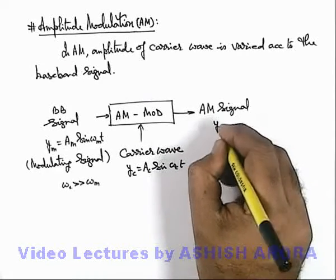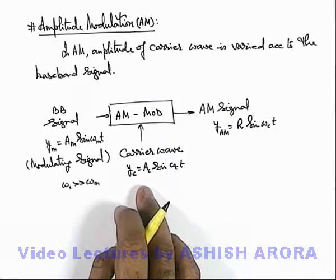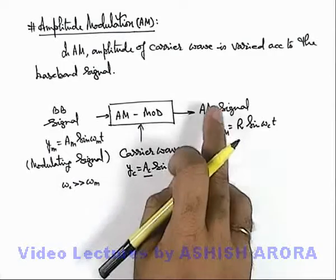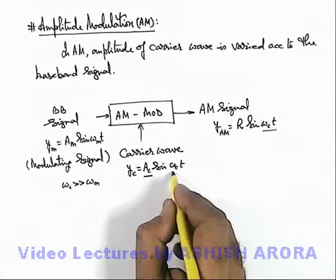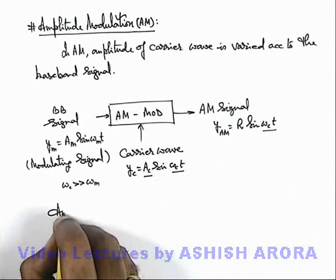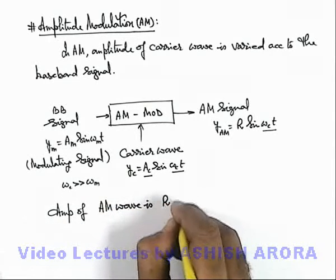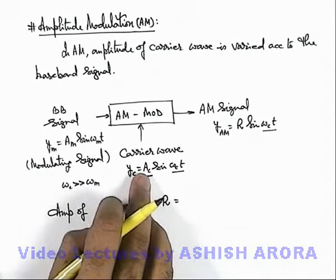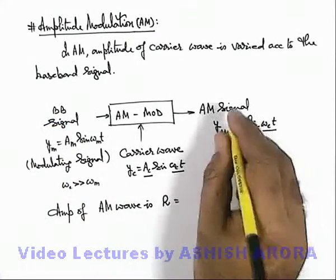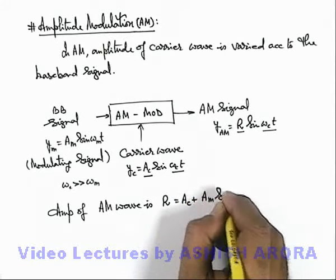Here the signal will be yam, and that will be equal to R·sin(ωct), because we are imposing the baseband signal onto the carrier wave in the form of amplitude only. So the amplitude modulated signal will have the same frequency as the carrier wave, but the amplitude will be modulated or modified. So the amplitude R of the AM wave, when Ac is superimposed with the baseband signal, will be: R = Ac + Am·sin(ωmt).